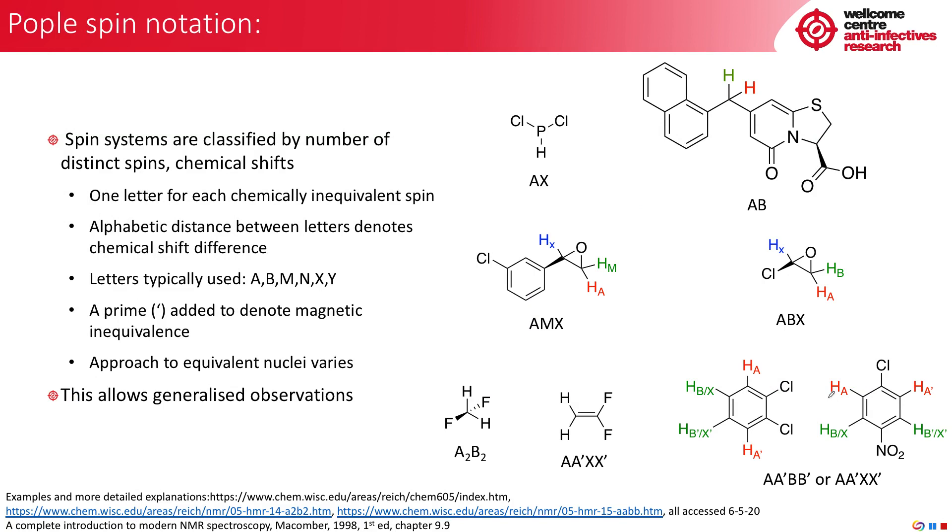Before moving on, I want to spend a little bit of time on nomenclature. Now, I know that nomenclature is deathly boring. Chemistry nomenclature is even more boring than a lot of other nomenclature. That said, you will hear these descriptions and it is worth understanding what people mean when they quote them. So spin systems can be classified by the number of distinct spins or chemical shifts. Now, there is one letter given for each chemically inequivalent spin in the spin system. And the alphabetic distance between the letters denotes the chemical shift difference.